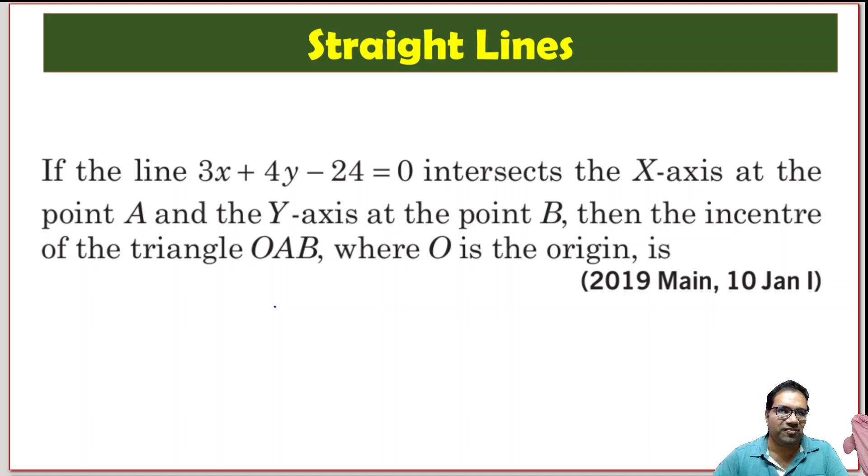We are given this line 3x plus 4y minus 24 equals 0, and this line is intersecting the x-axis at point A and the y-axis at point B.